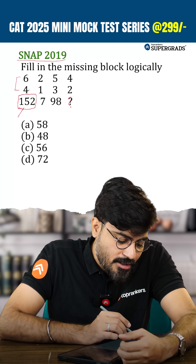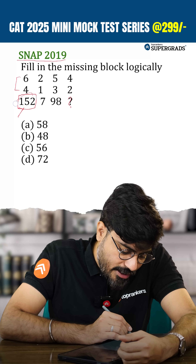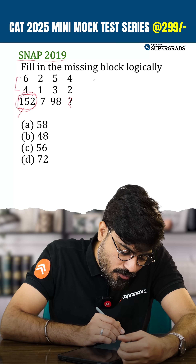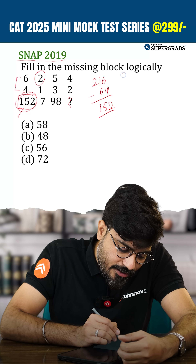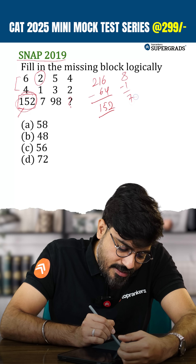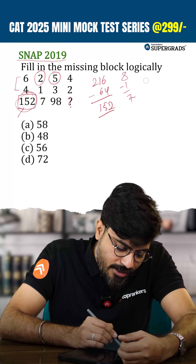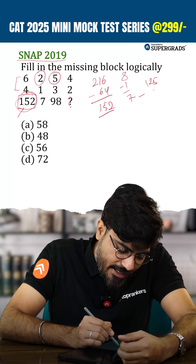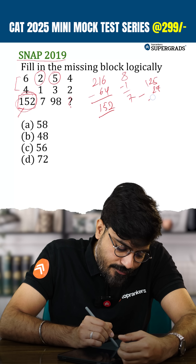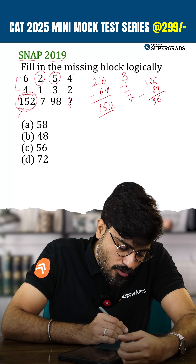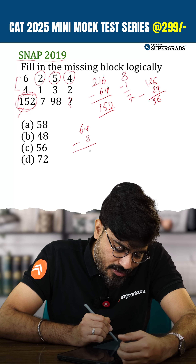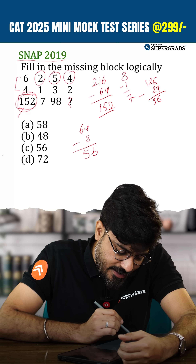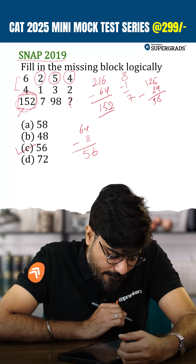Let's verify: 6³ minus 4³ is 216 minus 64, which is 152. Similarly, 8³ minus 1³ gives 7³ cases; 5³ minus 3³ is 125 minus 27 is 98. And 4³ minus 2³ is 64 minus 8, which is 56. Hence the answer is C, 56.